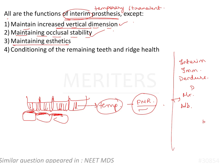Maintaining aesthetics: naturally, if you are giving a temporary restoration it is going to enhance aesthetics. And the last one is conditioning of remaining teeth and ridge health. Ridge health makes sense because if it is a completely edentulous patient and you are giving an interim restoration, then you are promoting the health of the ridge.